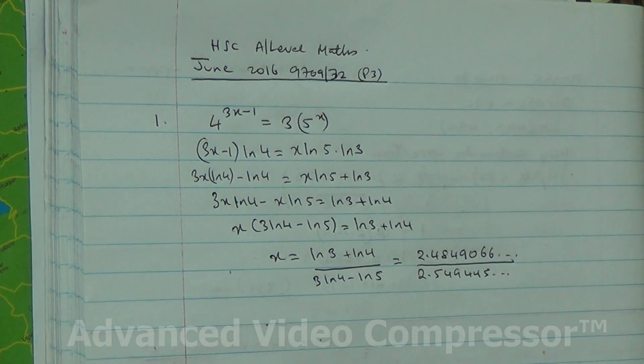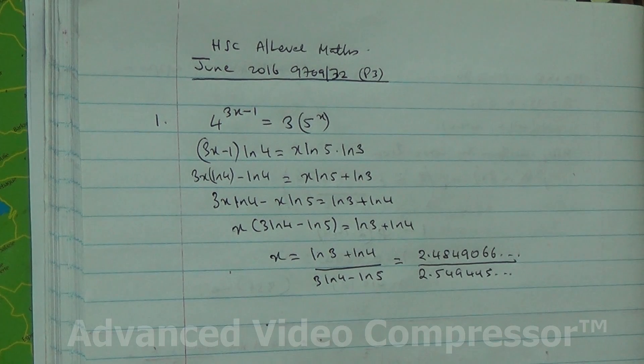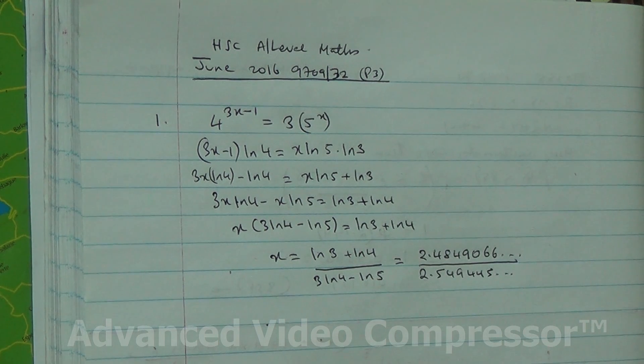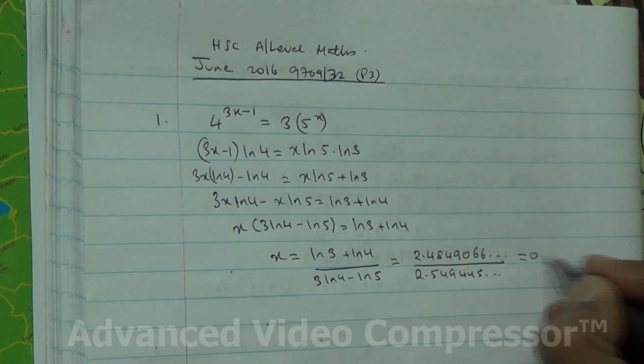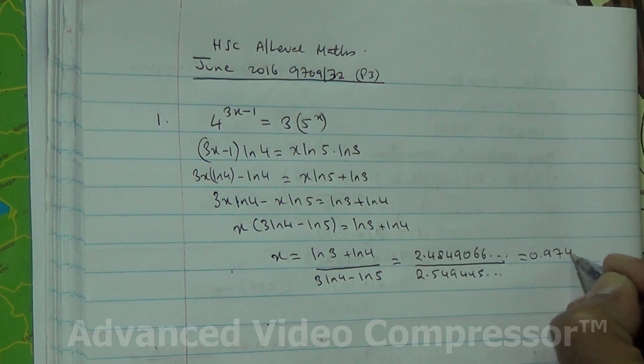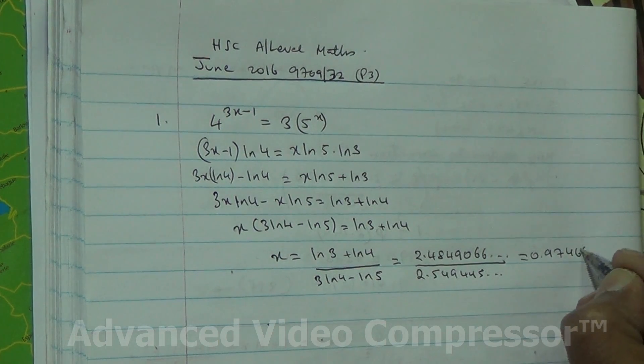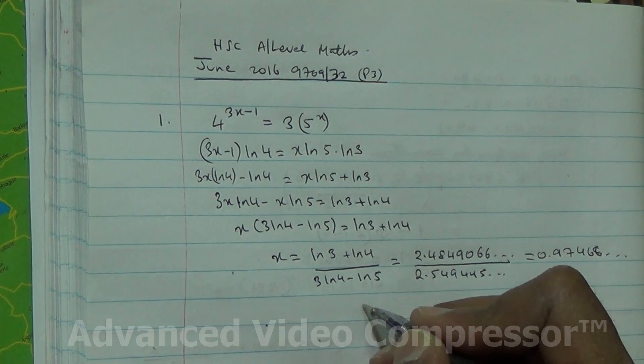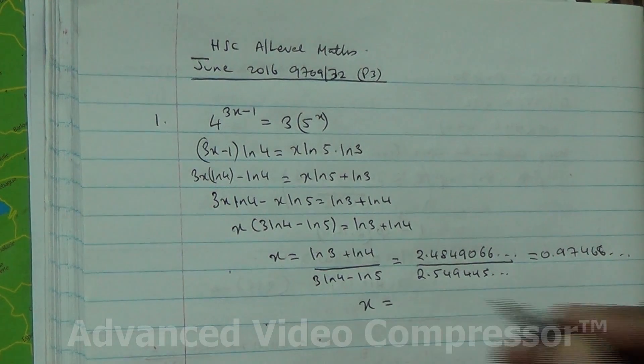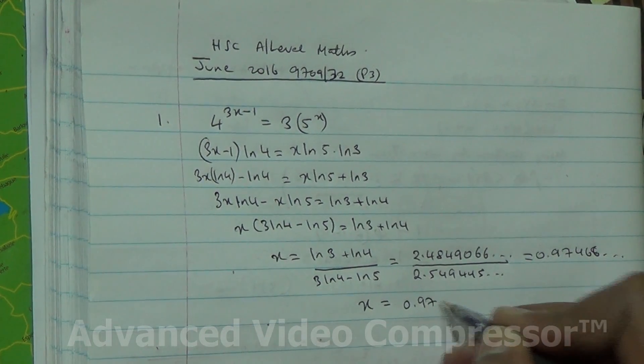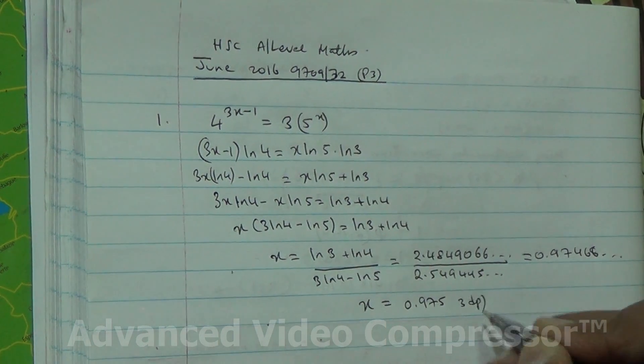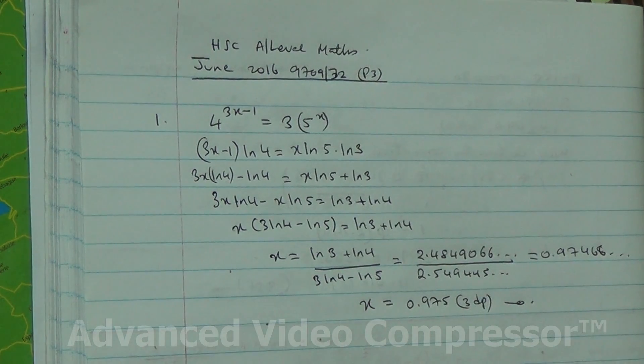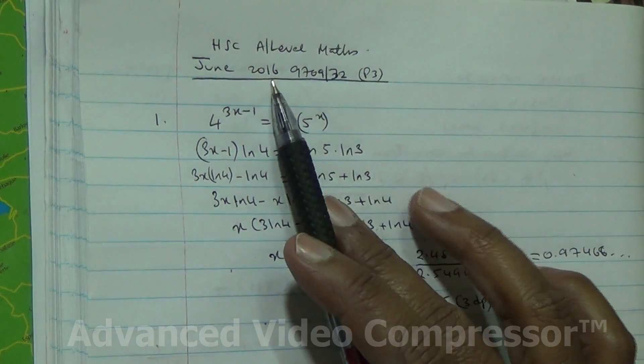So I'm just going to work this out on my calculator. The answer should be 0.97468. Therefore x is going to be 0.975, correct to 3 decimal places as required in the question. This is taken from June 2016 A-level Maths HSC P3.